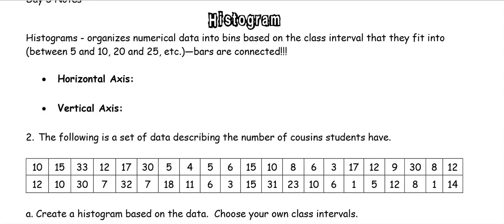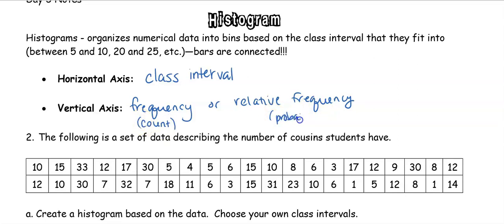On the horizontal axis this is going to be your class interval and on the vertical axis is going to be the frequency or relative frequency. And this is the same as when we did a bar graph. So remember on that y-axis you can either do the count which is the frequency or you can do the relative frequency which is the probability. It does not matter.